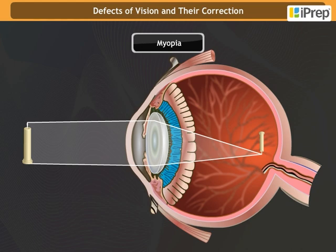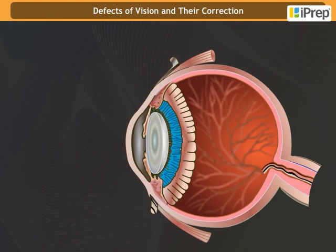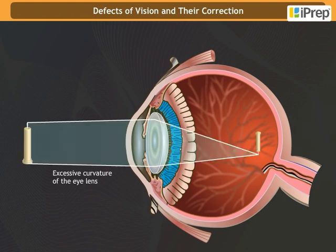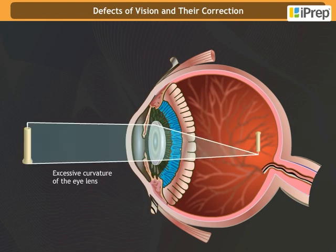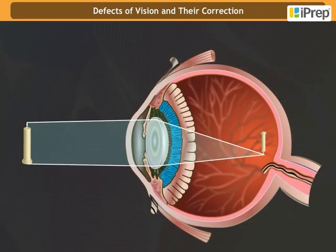This defect may arise due to excessive curvature of the lens or elongation of the eyeball. This defect can be corrected by using a concave lens of suitable power.